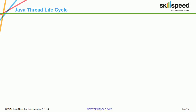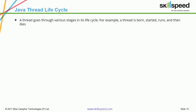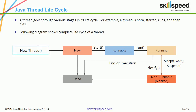Let us next go through the concept of the Java Thread Lifecycle. A thread goes through various stages: it is born, started, runs, and then dies. In the diagram, the colored rectangle boxes represent the state of the thread, and the labels on the arrows are the methods used to make the thread transition into or out of any state.